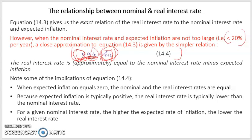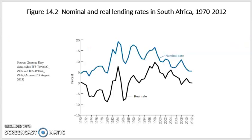These relations emphasize the relationship between real and nominal interest rates and expected inflation, and amplify the importance of adjusting for inflation. This figure shows a practical example by looking at nominal and real interest rates in South Africa from 1970 to 2012. The nominal interest rates are represented by the blue line and the real interest rates by the black line.